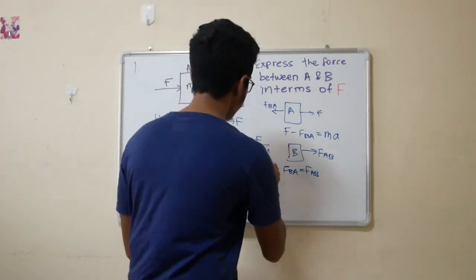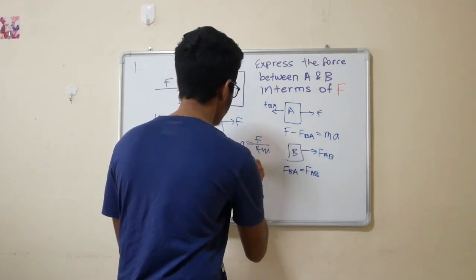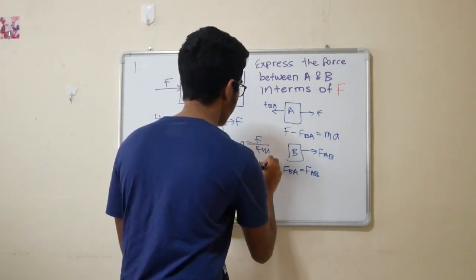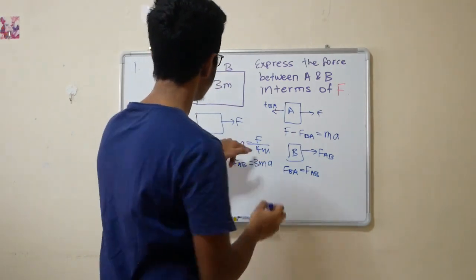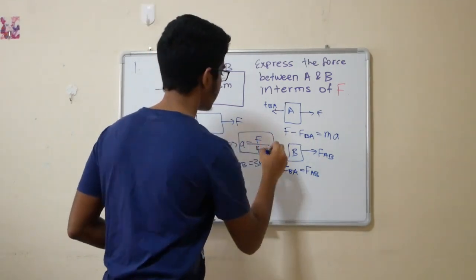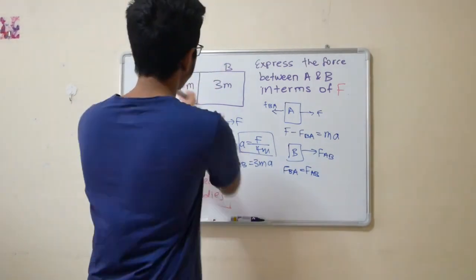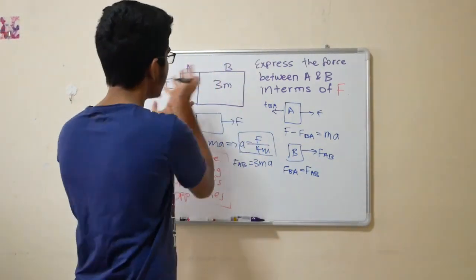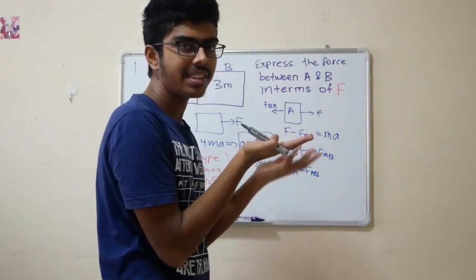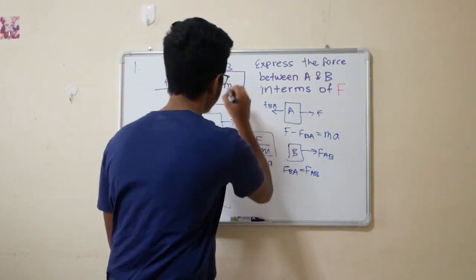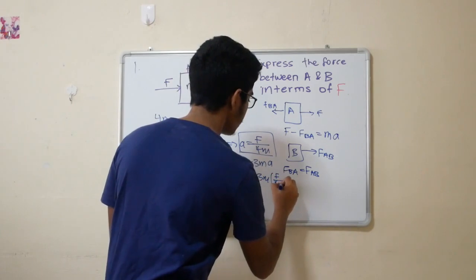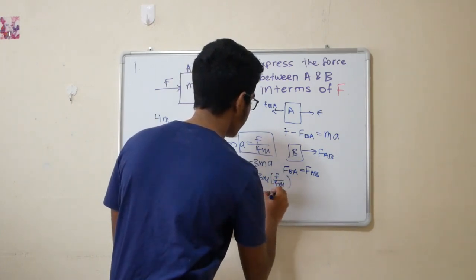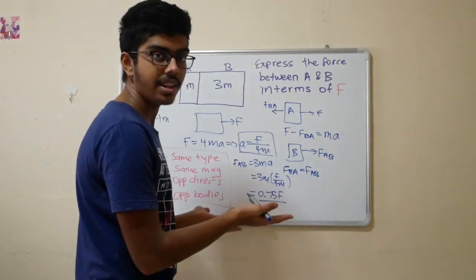These act on opposite bodies, opposite directions, same magnitude. They have the same type. So, eventually, they're just the same magnitude. F_AB equals 3MA. The acceleration is same as the acceleration that we figured out right here. Substitute this in, we get 0.75F. And that's your answer.